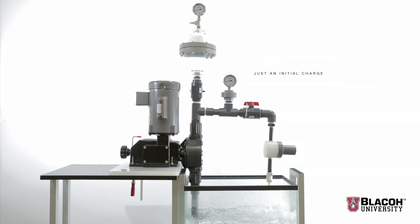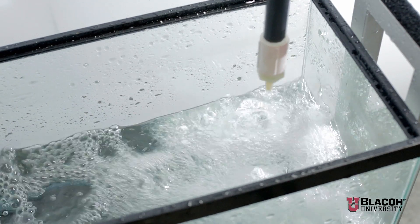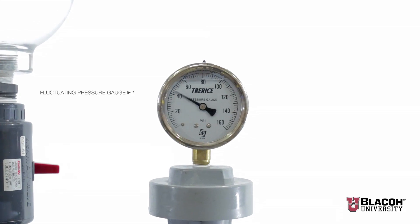This metering pump is a single diaphragm pump. Being a single diaphragm pump, it creates a start and stop action with each stroke of the pump. That start and stop action can be observed in the system pressure gauge which is fluctuating between 10 and 50 psi.